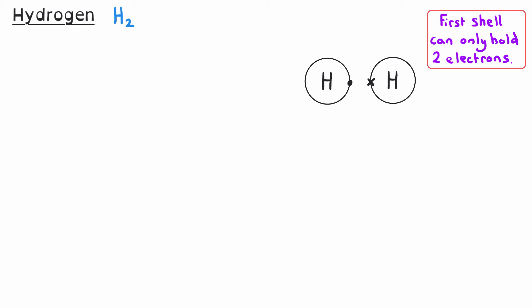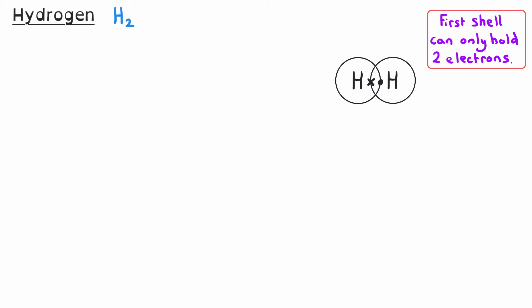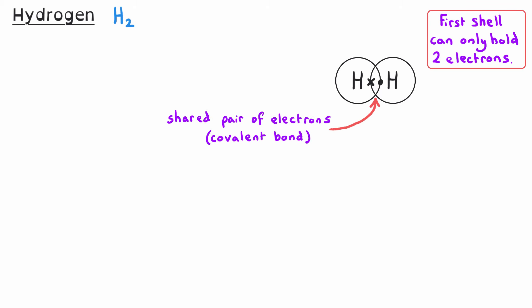These circles represent the outer shells of the atoms. When the covalent bond forms, those outer shells overlap, and the electrons in that overlapping area are shared by the two atoms in the bond. This gives a shared pair of electrons, and now each hydrogen atom has a full outer shell of two electrons.